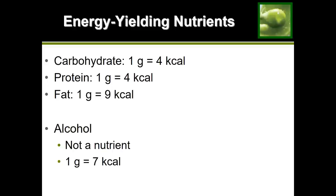The nutrients that provide us with calories are carbohydrates, proteins, and lipids. Alcohol is also listed as providing calories, even though it is not a nutrient — alcohol is classified as a toxin, so it's not part of the energy-yielding nutrients. However, it's important to know that one gram of alcohol provides seven calories.